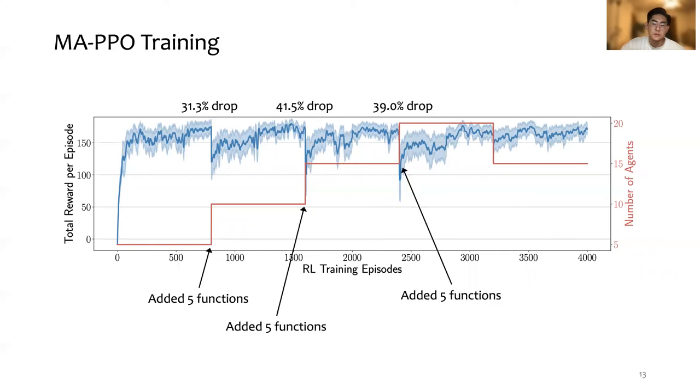We updated the environment three more times after every 800 episodes by either adding five new functions or removing five existing functions. We observed a similar reward drop and later convergence to about the same level.